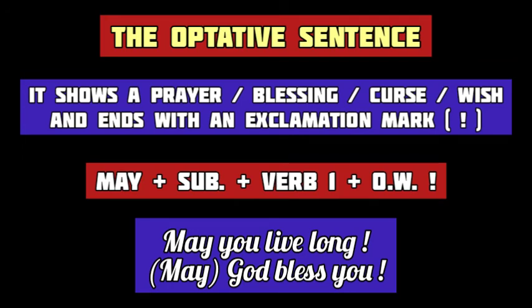The optative sentence expresses a prayer, a blessing, a curse, or a wish. It ends with an exclamation mark. The structure of the optative sentence is: the modal verb 'may' followed by the subject plus the first form of the principal verb and then the other words. So, an optative sentence starts with the modal verb 'may'. For example, 'May you live long' — this sentence expresses a blessing or a prayer. But sometimes the modal 'may' is not used at the start of the optative sentence; it's hidden or understood. For example, 'May God bless you' becomes 'God bless you'.